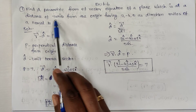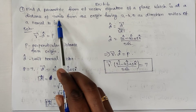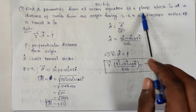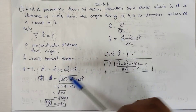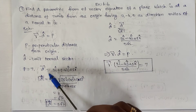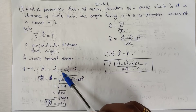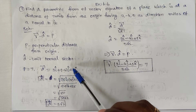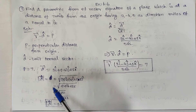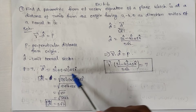p is given as seven units. The direction vector d⃗ is equal to 3î - 4ĵ + 5k̂.